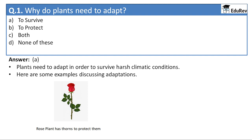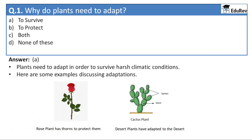So the rose plant has adapted to the harsh climatic condition. Here is another example of a cactus plant. Cactus plant does not have leaves but it has spines which are stronger than leaves. Also, the roots of the cactus plant are able to absorb more and more rainwater. Desert plants like cactus have adapted to the harsh climatic conditions of deserts. So the correct answer is option A.